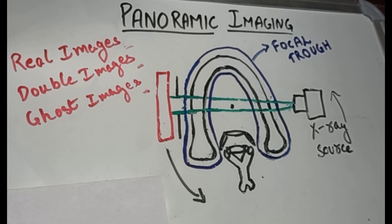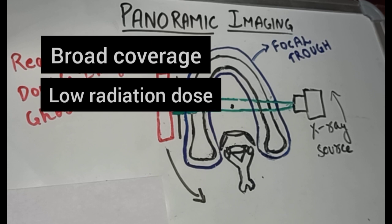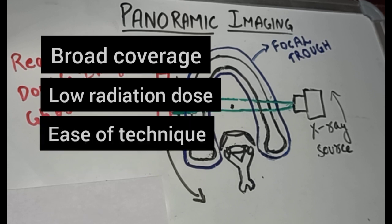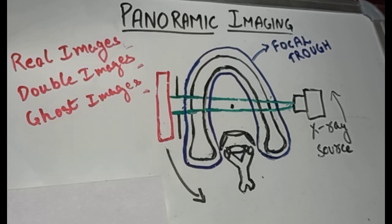Advantages of OPG compared with full mouth examination include: broad coverage of facial bones and teeth, low radiation dose, ease of technique, and the ability to be used in patients who cannot tolerate intraoral radiography due to gag reflex. It is also a quick and convenient radiographic technique for both the patient and the clinician.